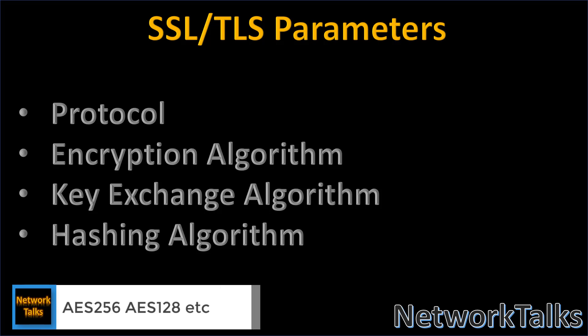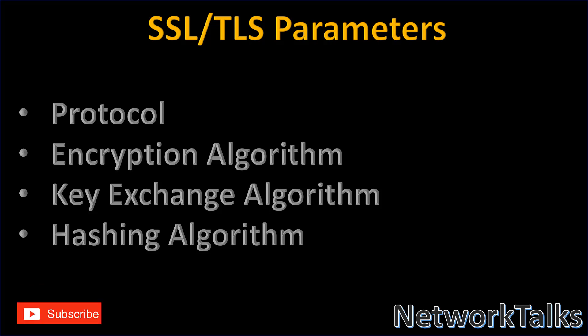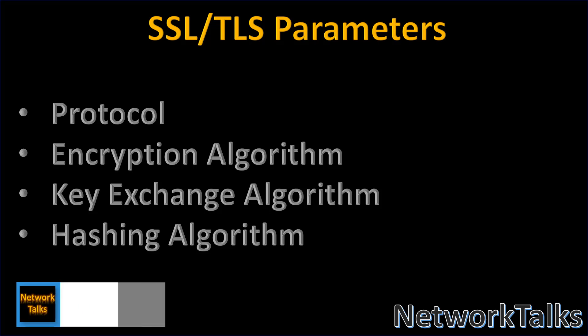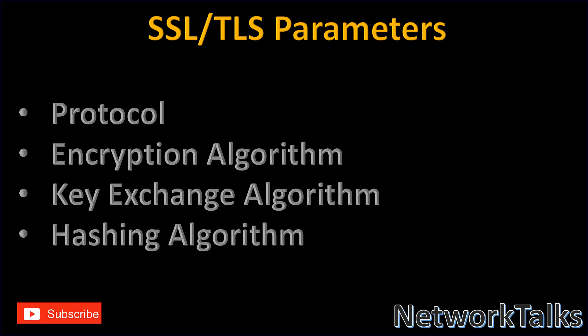The encryption algorithm includes AES-128-CBC — AES stands for Advanced Encryption Standard, and 128 is the bit size of the encryption. The key exchange algorithm includes DHE and ECDHE; nowadays ECDHE is very popular in SSL and TLS handshakes. The hashing algorithm is SHA, which includes SHA-1 and SHA-256. These are the parameters verified during the SSL/TLS handshake.